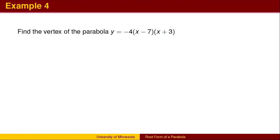As a final example, we find the vertex of a parabola expressed in root form. The roots are at 7 and negative 3. Averaging the two roots finds the x-coordinate of the vertex to be at 2. Plugging 2 into the original equation gives the y-coordinate of the vertex to be 100. The vertex is at 2 comma 100, with the axis of symmetry at x equals 2.